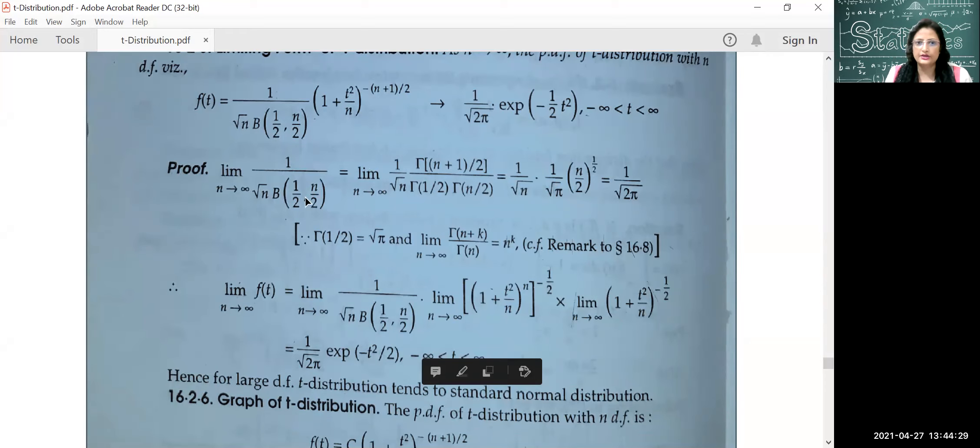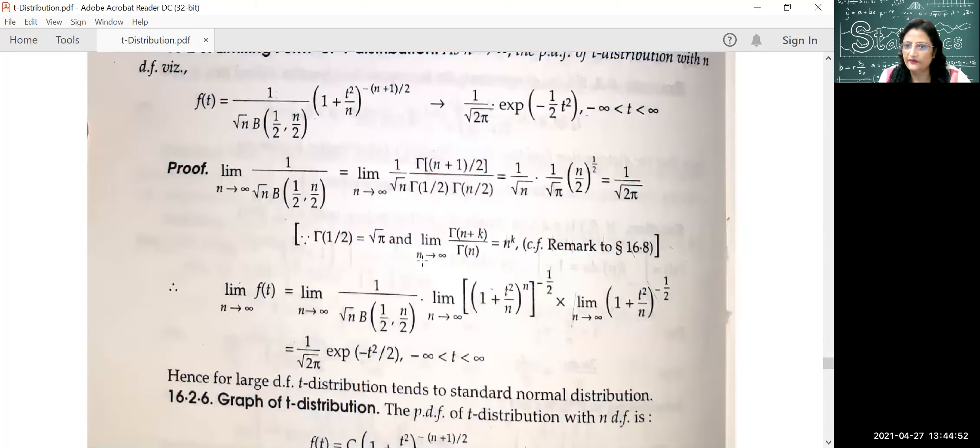You will write limit n tends to infinity. You will convert beta into the form of t-distribution. This is the result you have to look at in the brackets: limiting value of n tends to infinity, tau n plus k upon tau n, is equal to n raised to k. You will use this result as it is in the theorem.